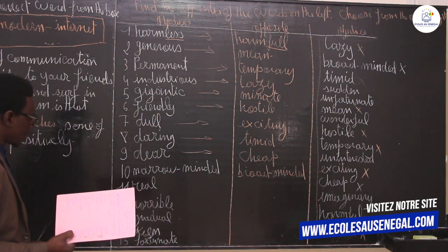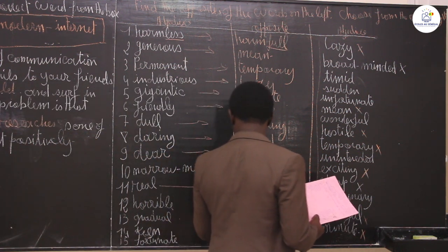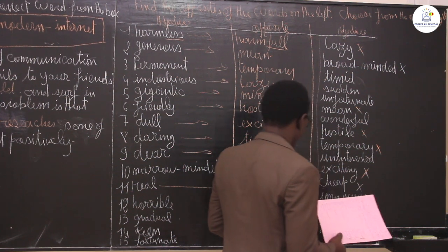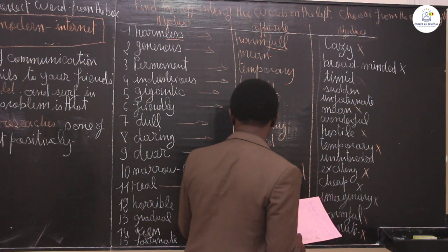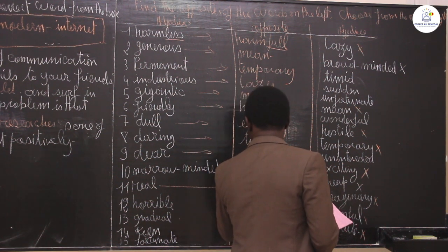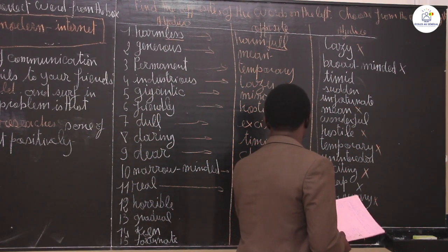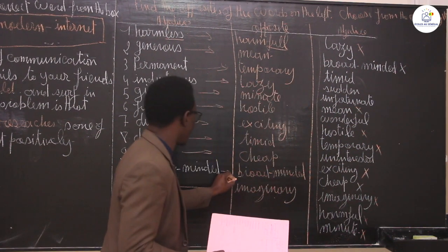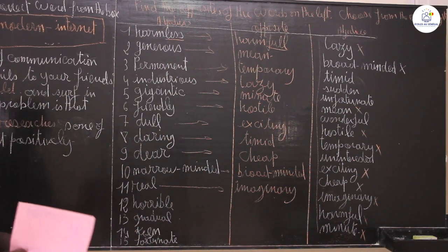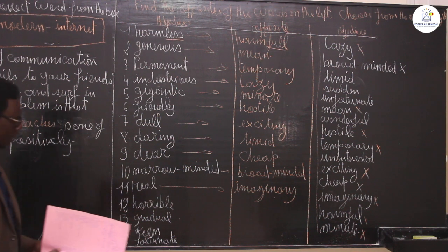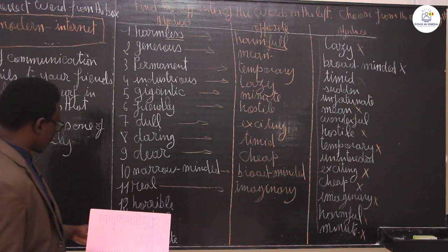Real — what is the opposite of real? It is imaginary. Imaginary is the opposite of real. Something real is something which is concrete, something we can see and touch.